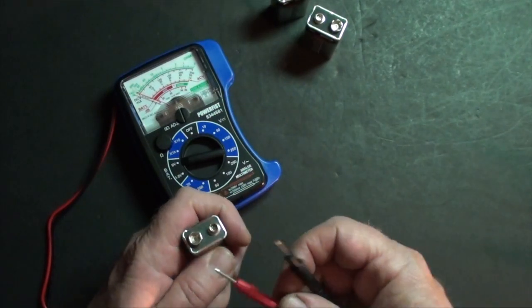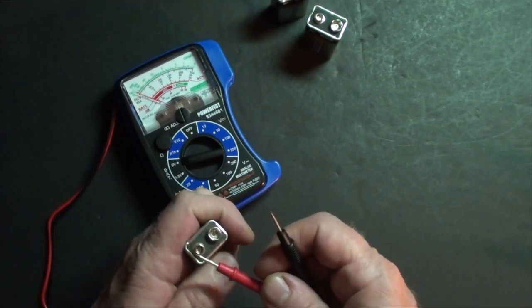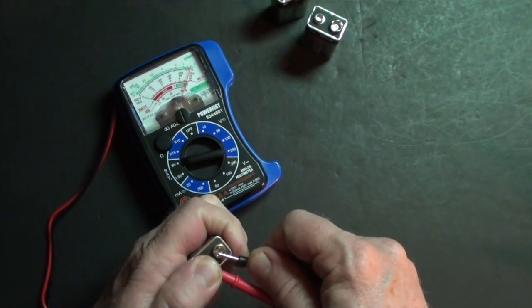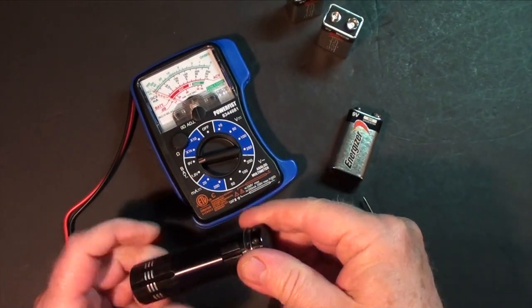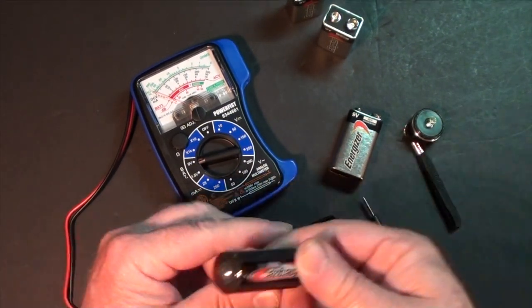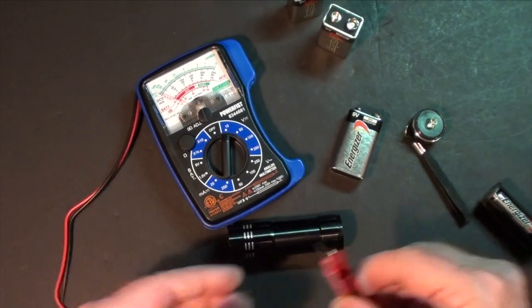If you have smoke detectors that run on 9 volt batteries, it's a good idea to test them periodically. This little flashlight has a carriage inside for three AAA batteries carrying four and a half volts or more.